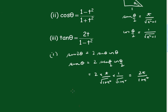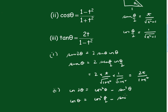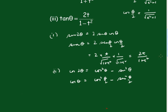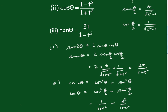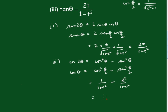Now part 2, the cos derivation. We know cos 2θ equals cos²θ minus sin²θ, so cos θ equals cos²(θ/2) minus sin²(θ/2). Replacing, we get 1 over (1+t²) minus t² over (1+t²), and over a common denominator of (1+t²) we get (1 minus t squared) over (1 plus t squared).